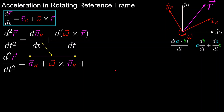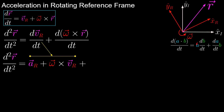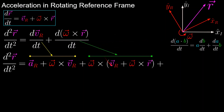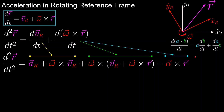Now we move on to the omega cross r term, where we'll be using the product rule. Starting with the first term, we have omega cross the derivative of r — and we already know the derivative of r from the previous step, so we can plug that straight in. For the second term, we need the derivative of angular velocity, which is angular acceleration, which we'll call alpha, cross with the position vector.